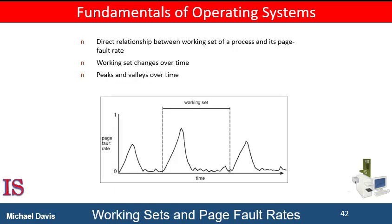Practically speaking, thrashing and the resulting swapping have an irritating high impact on performance. The current best practice in implementing a computer system is to include enough physical memory, whenever possible, to avoid thrashing and swapping. From smartphones through large servers, providing enough memory to keep all working sets in memory concurrently, except under extreme conditions, provides the best user experience.